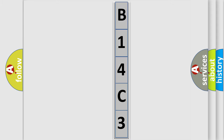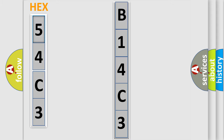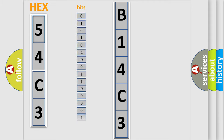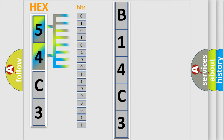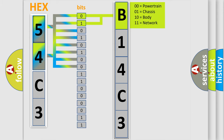The error code is split into two bytes consisting of 16 bits. One bit is the basic unit that each computer works with. The bit has two logical states: zero (low level) and one (high level). By combining the first two bits, the basic character of the error code is expressed.